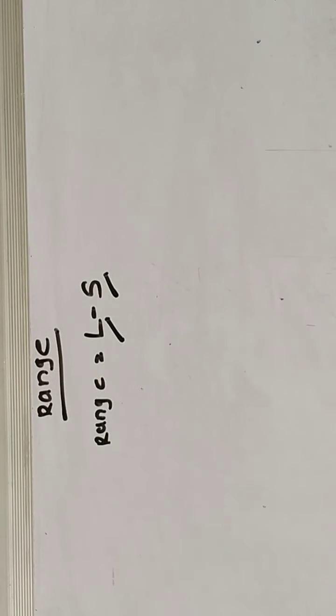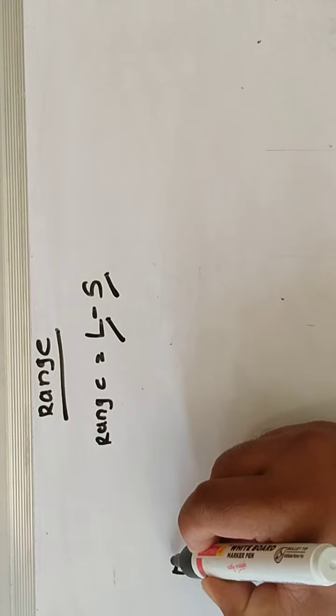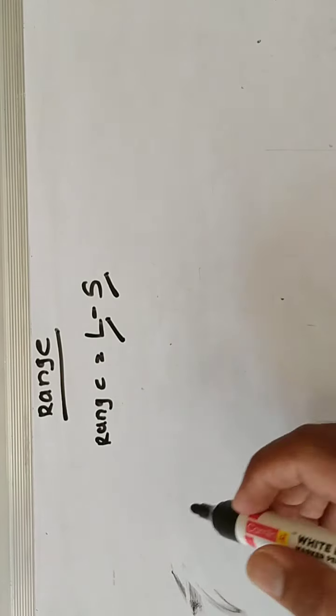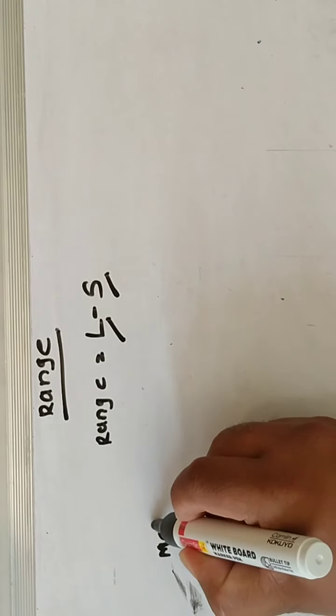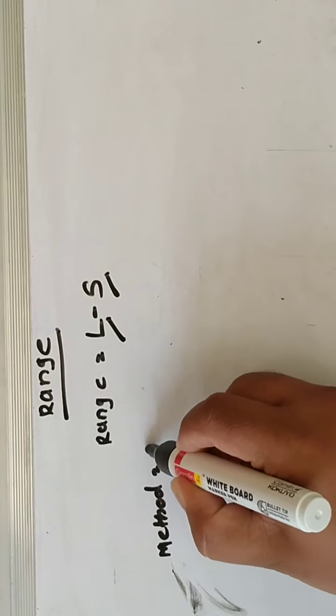Friends, in individual observation and discrete series, L and S are easily identified. But in continuous series, the following two methods are discussed. Method number first: